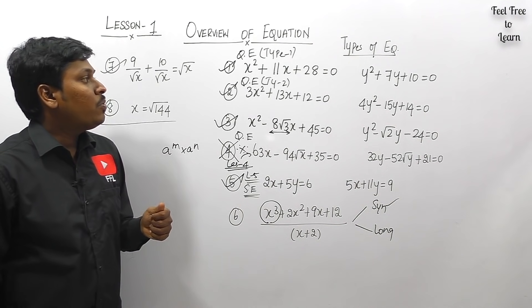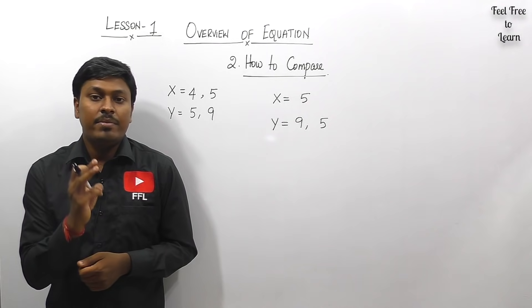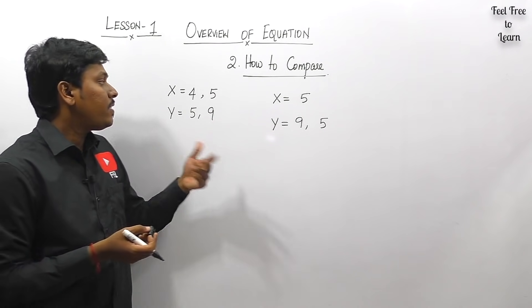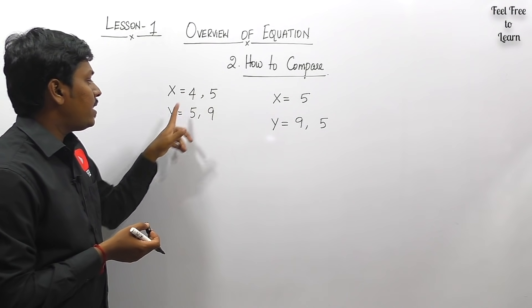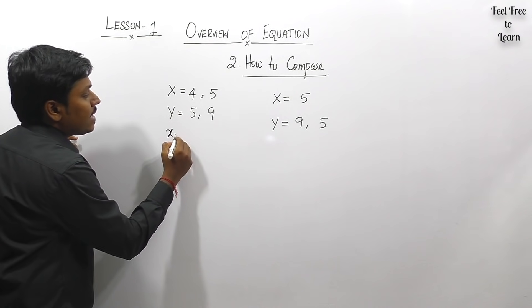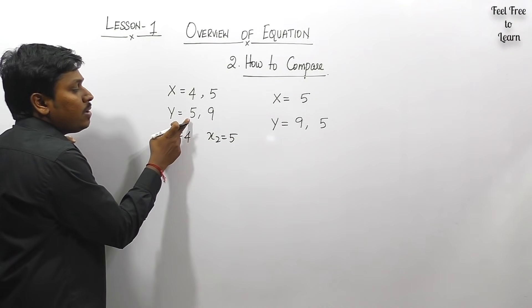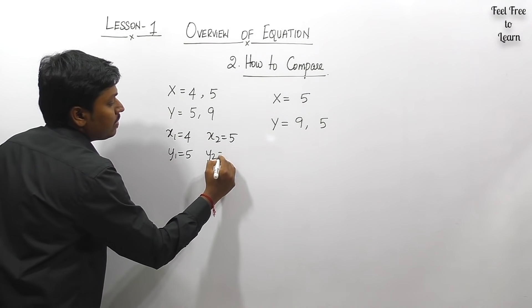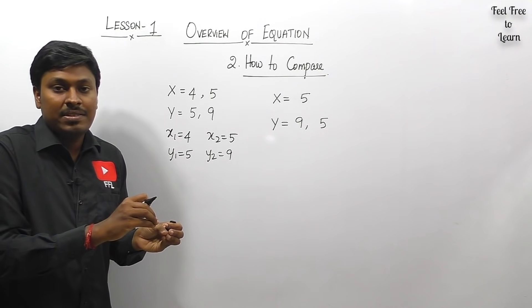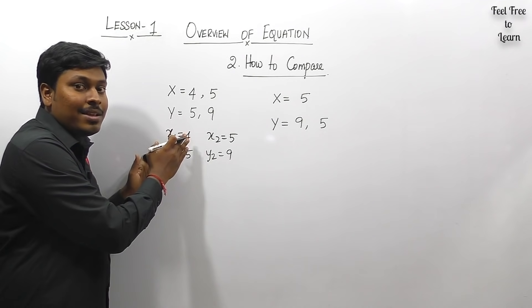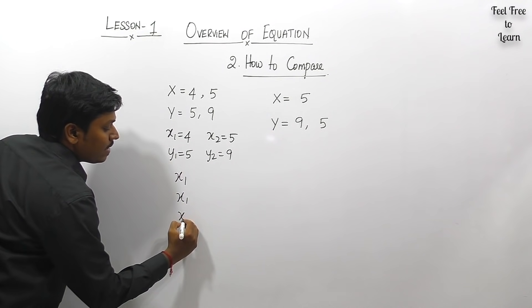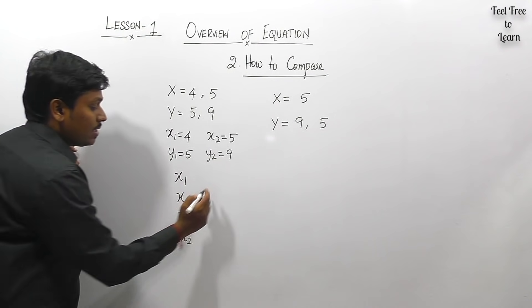Let me move on to note number two: how to compare the value of x and y. Suppose we solved a quadratic equation and found x = 4, 5 and y = 5, 9. We label these as x1 = 4, x2 = 5, y1 = 5, y2 = 9. The meaning of comparing x and y is that we must compare all x values with all y values. I keep x1 fixed and compare it with y1 and y2, then keep x2 fixed and compare it with y1 and y2.